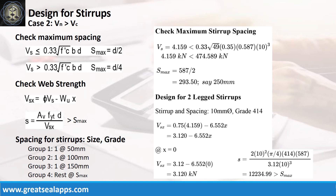The spacing of stirrups is as follows: one at 50 mm, one at 100 mm, one at 150 mm, and the rest at 250 mm.